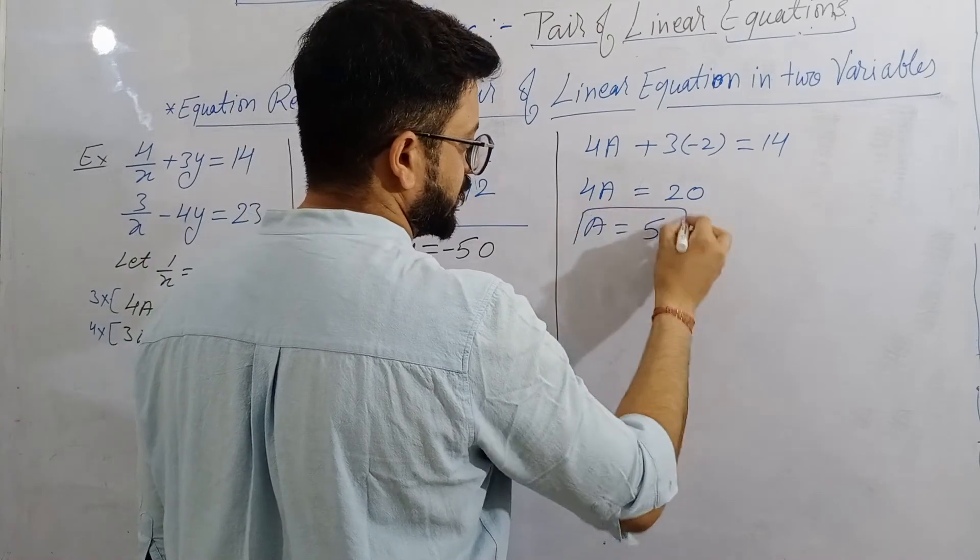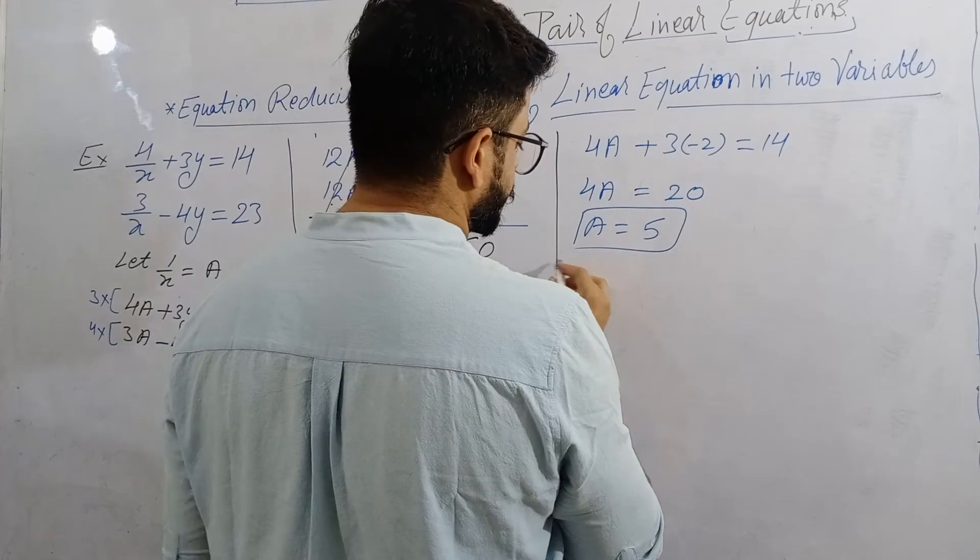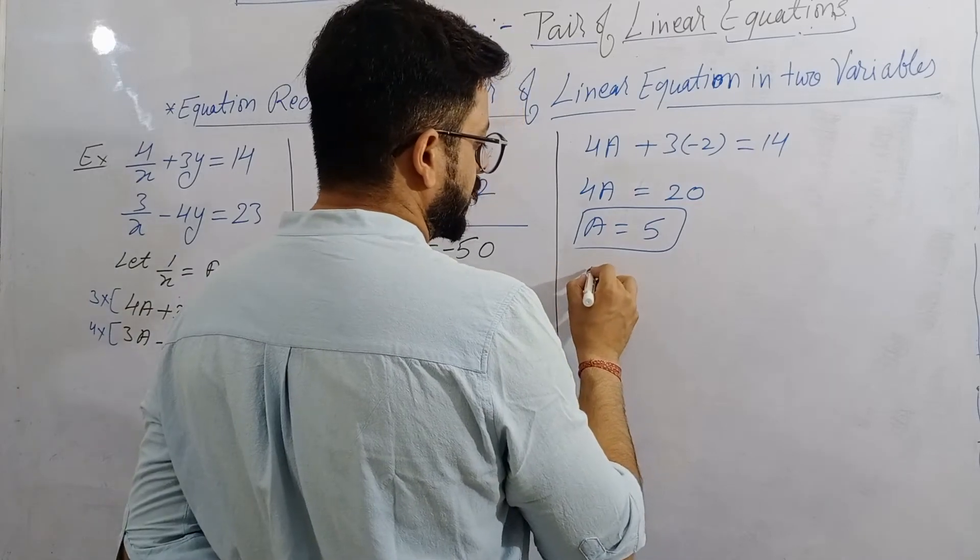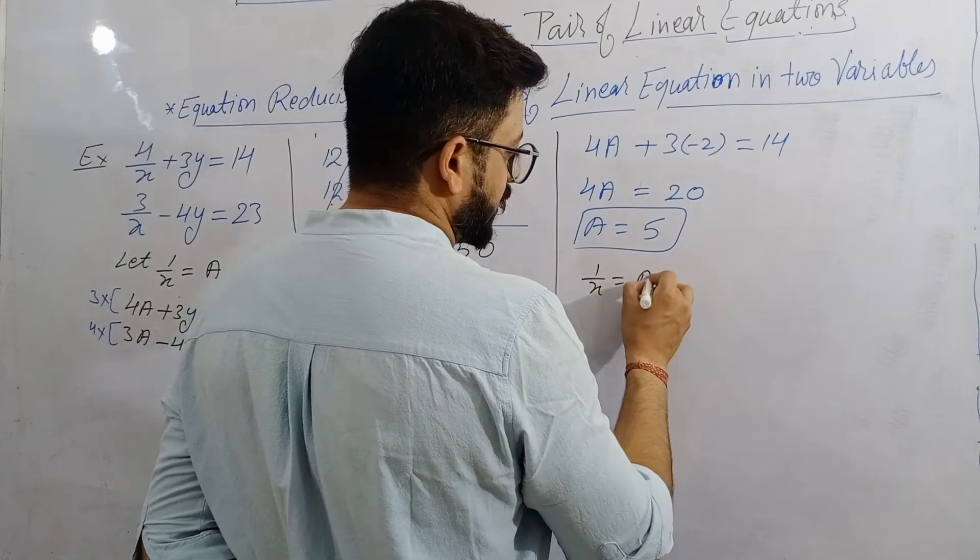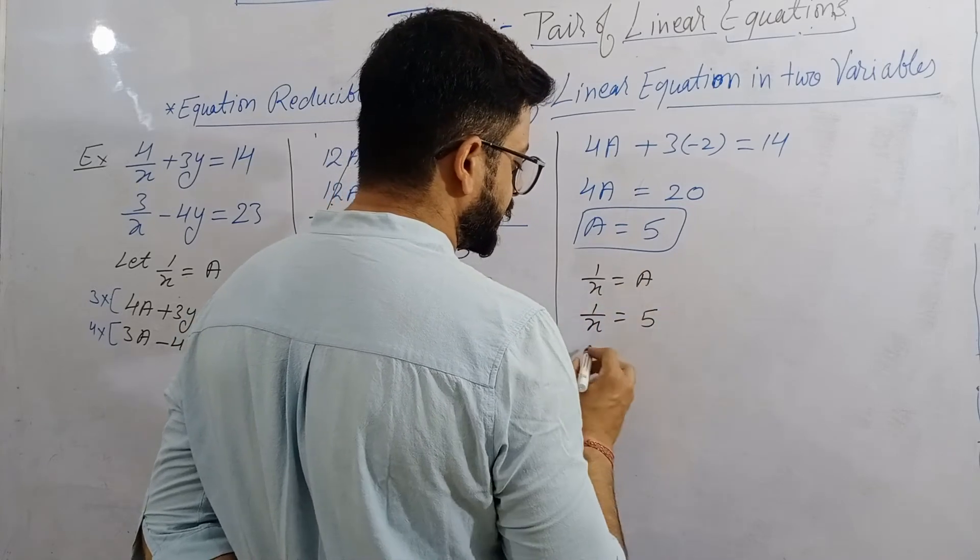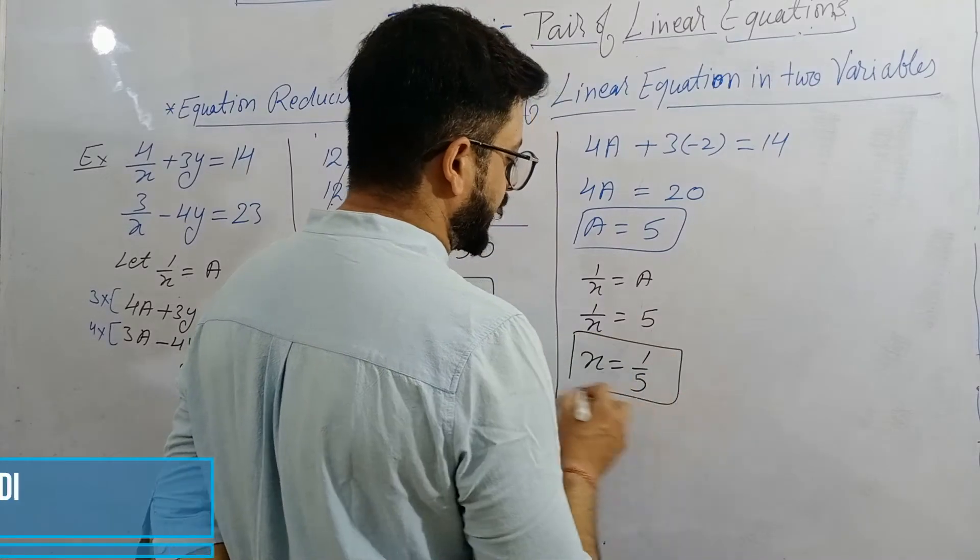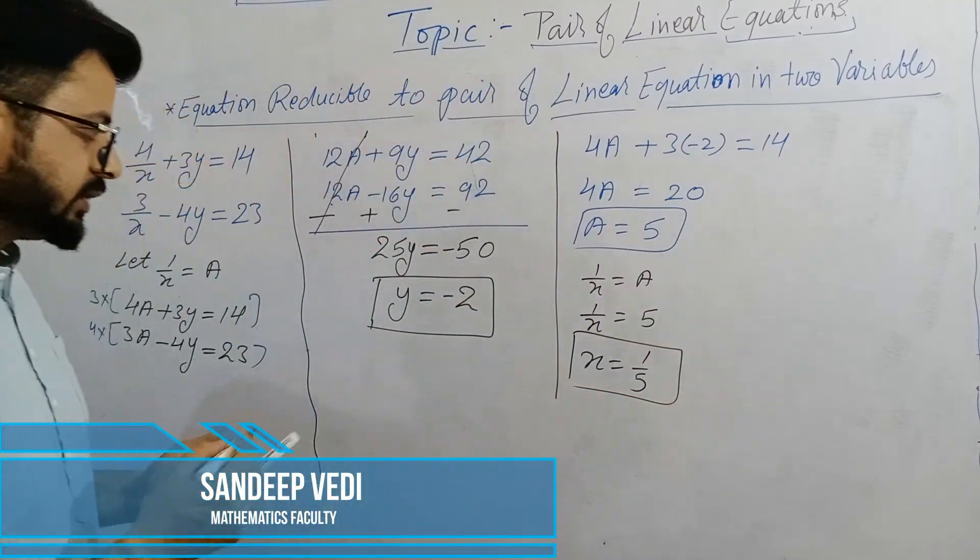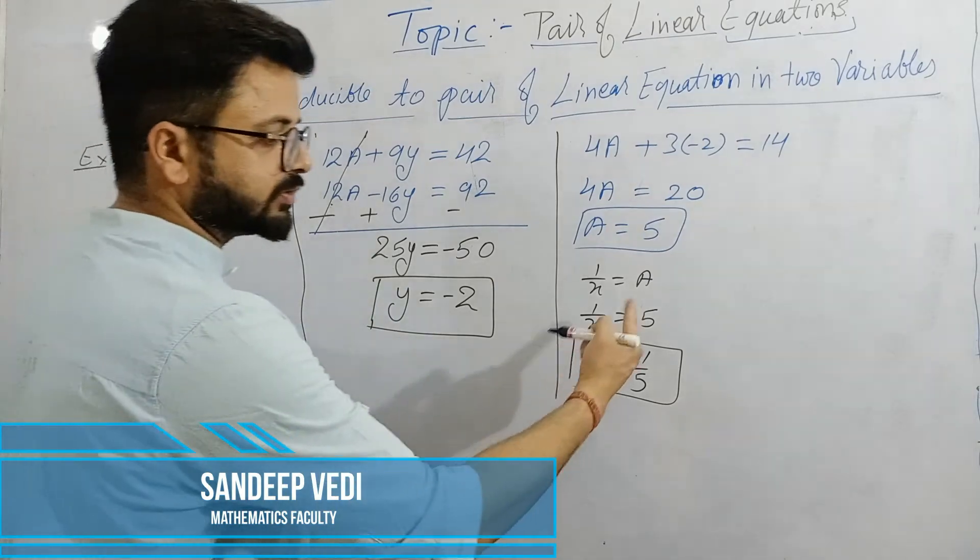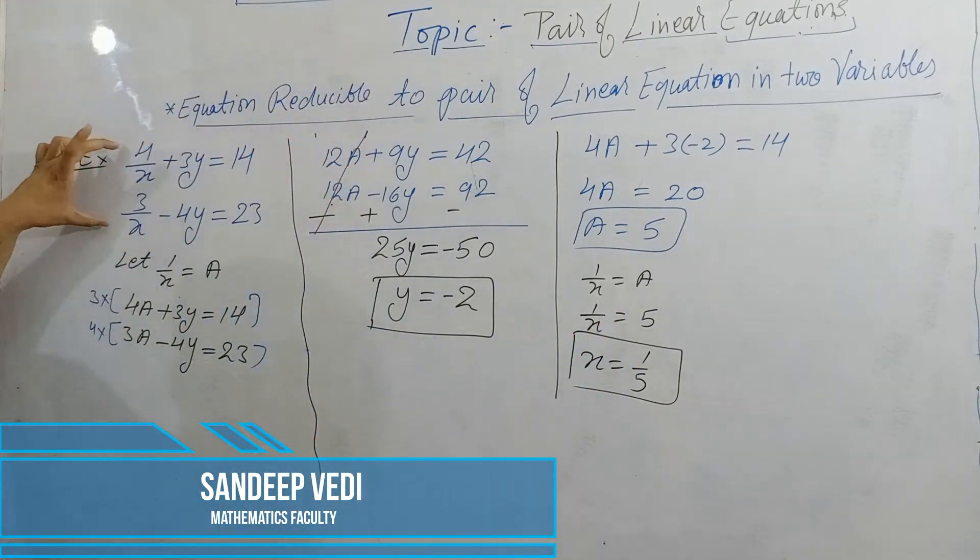Now afterwards A value we need the value of X. So we know that one upon X is equal to A. One upon X is equal to 5. X is equal to one upon 5. Finally we got both the values: Y value is minus 2, X value is one upon 5. These are required solutions of these two equations.